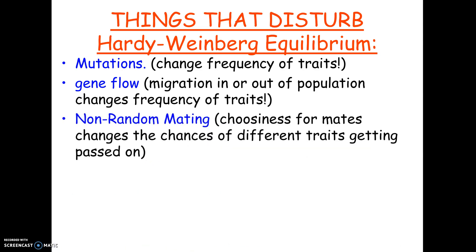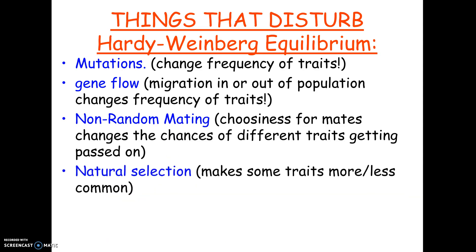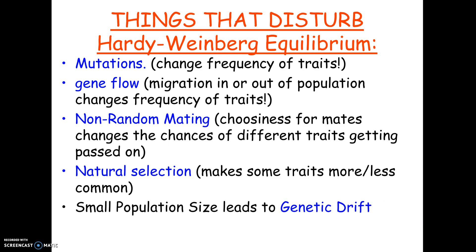Third, non-random mating — if organisms are picky and choosing specifically for or against a trait, it changes gene frequencies. Fourth, natural selection: if having black eyes helps mice survive better, black-eyed mice will have more babies, passing that trait on so it becomes more common in the next generation. And finally, small population size. If the population is small, you'll see limits to variation, and on top of that, the population becomes very subject to genetic drift.